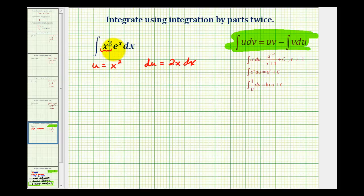So this leaves e to the x dx for dv. And now we'll integrate to determine v. The integral of e to the x with respect to x is just e to the x.